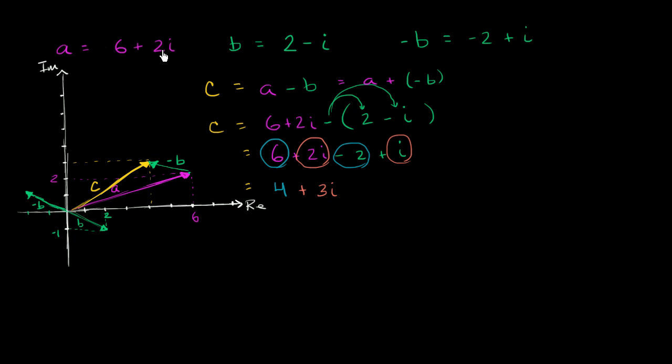So on one level, it's kind of straightforward manipulating expressions and just recognizing that you can only add the imaginary parts to the imaginary parts, and the real parts to the real parts. And if you want to visualize it on an Argand diagram, subtracting B from A is equivalent to adding the negative of B to A.